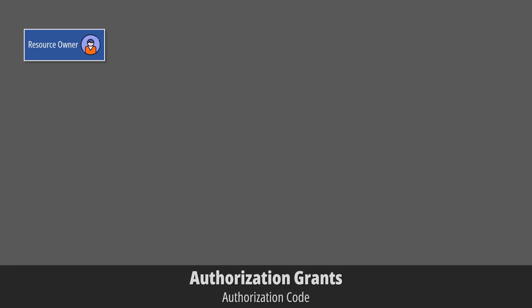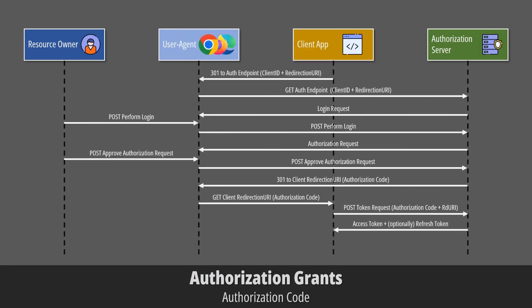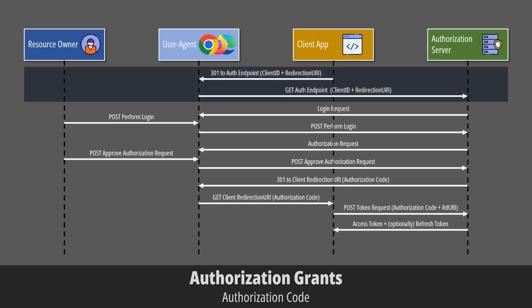Let's start with the authorization code. This is a grant type that covers the scenario we already described, where a third-party application like Runalyze tries to access our data on a given platform like Strava. Let's have a look at the sequence diagram. The client application initiates the flow by redirecting our browser to the authorization endpoint. It includes some data, like the identifier of the client, the requested scope, local state, and a redirection URI.